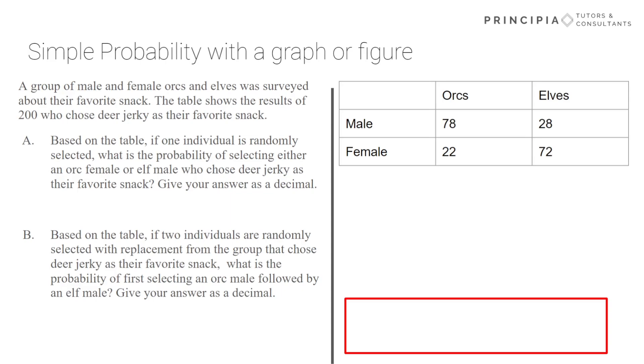All right, what we can see from the first question, so question A, we want the likelihood of selecting just one individual who is either a female orc or a male elf. 'Or' means we add the probabilities. Remember, we start with 200 total. Well, 22 of those orcs are females, so 22 out of 200. 28 of the elves are males, so 28 out of 200. And so the probability of either an orc female or a male elf would just be 22 over 200 plus 28 over 200. So you get 50 over 200, which reduces to 0.25. Why am I leaving my answer as 0.25? Because the question specifies give the answer as a decimal.